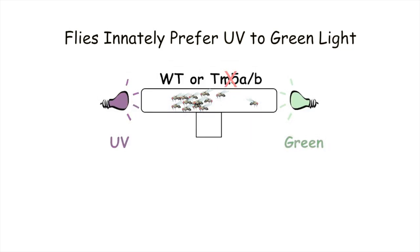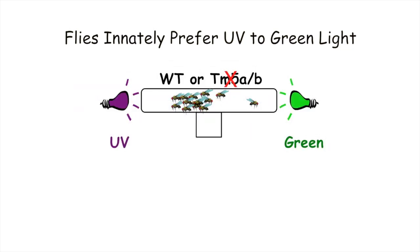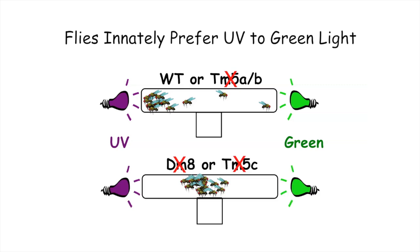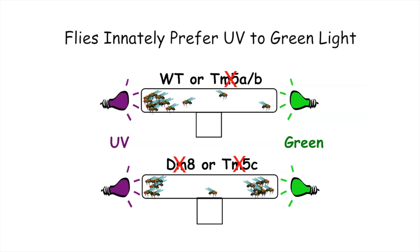Then I tested the color choice behavior using a T-maze apparatus. Like most insects, wild-type fruit flies are innately attracted to light, but they prefer UV light to green light. Inactivating Tm8 or Tm5c neurons, but not Tm5a/b, abolished their UV preference.